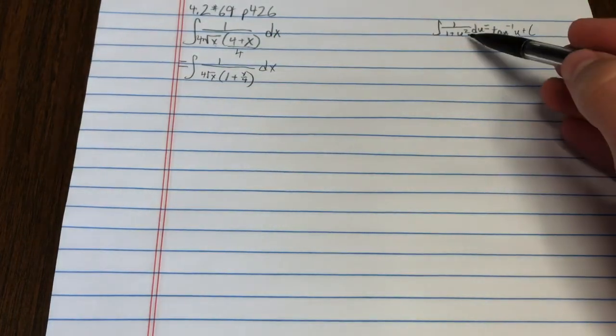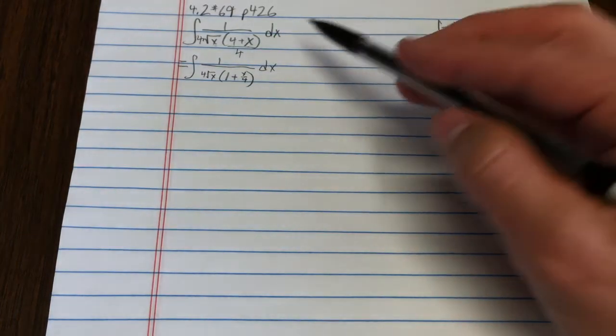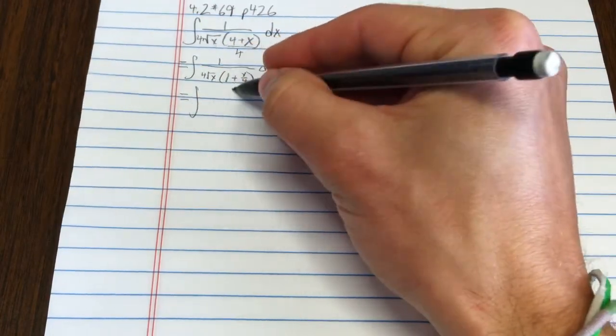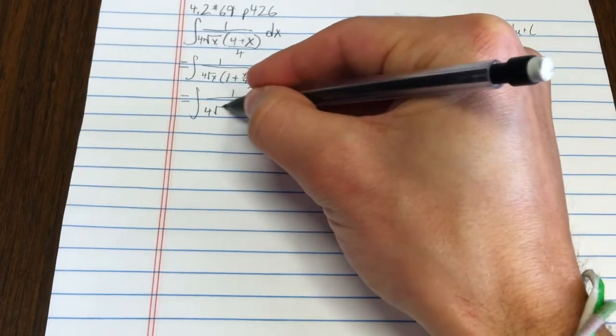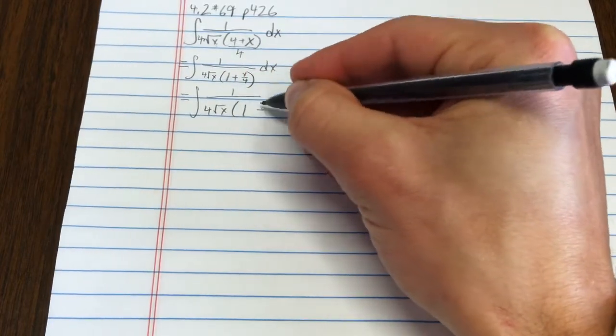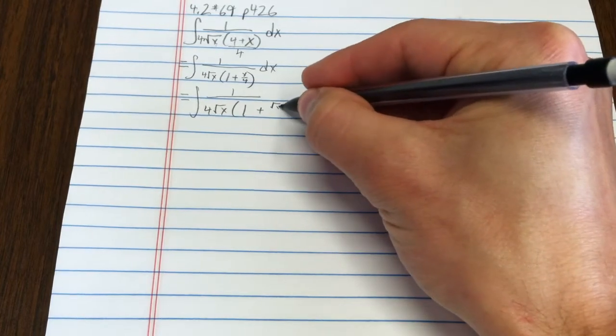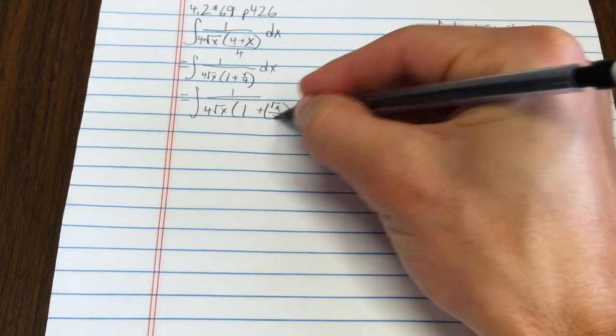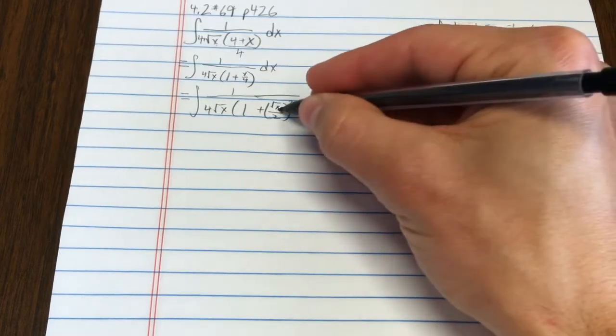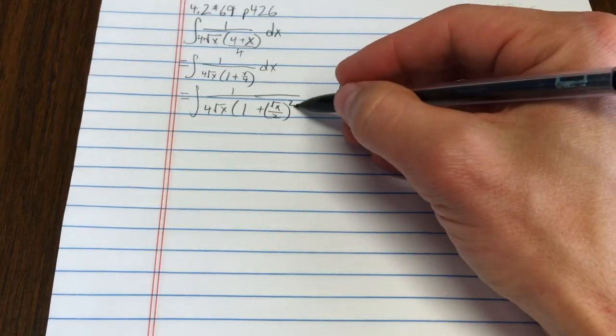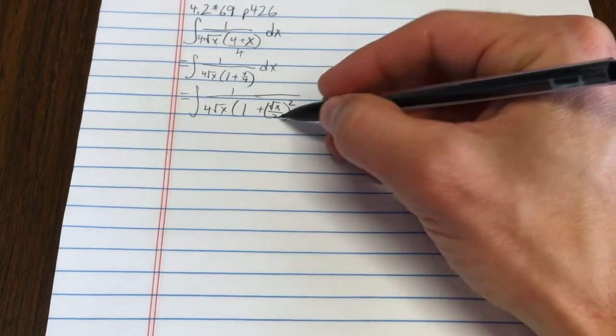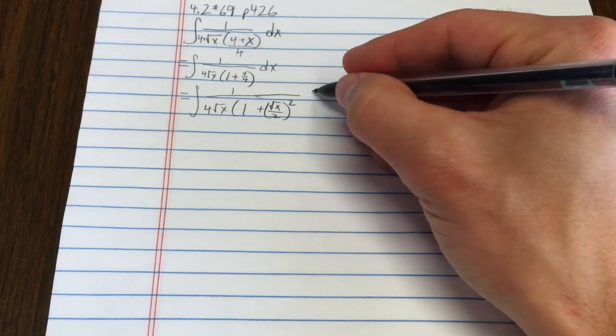But remember, my plan to take over the world is to write this as something squared. So why don't I write this as 1 plus the square root of x divided by 2 squared. The square root of x squared is 2, sorry, the square root of x squared is x, and 2 squared is 4, so that works pretty well.